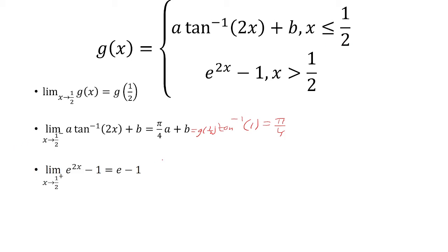Now let's solve for the right-hand limit. We're looking at values greater than one half, so we're going to use the function e to the 2x minus 1. Plugging in one half, we get e minus 1. And so we want to set these two equal to each other. But the problem is we have two unknowns, and that means we need to have two equations.